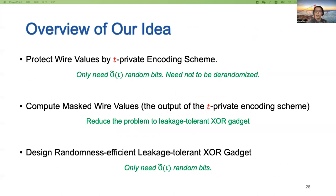Our work does not follow this approach for derandomization. In the first step, instead of using additive sharings to protect wire values, we choose to use a T-private encoding scheme to protect wire values. We show that such a T-private encoding scheme only needs Õ(T) random bits, where the Õ notation omits logarithmic factors. In the second step, we show that computation of the T-private encoding scheme can be reduced to constructing a leakage-tolerant XOR gadget. Finally, we construct a randomly-sufficient leakage-tolerant XOR gadget which only uses Õ(T) random bits, solving the problem.